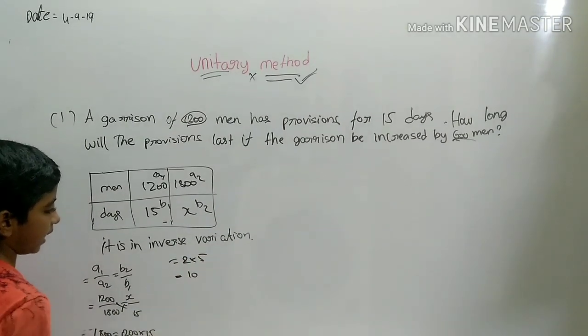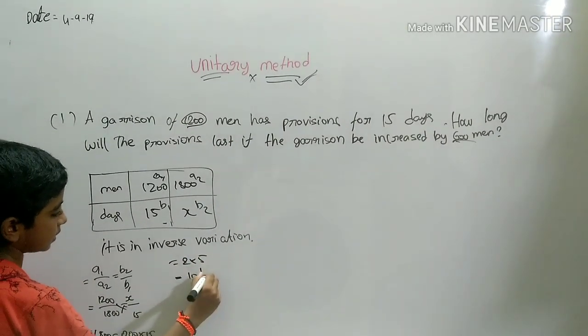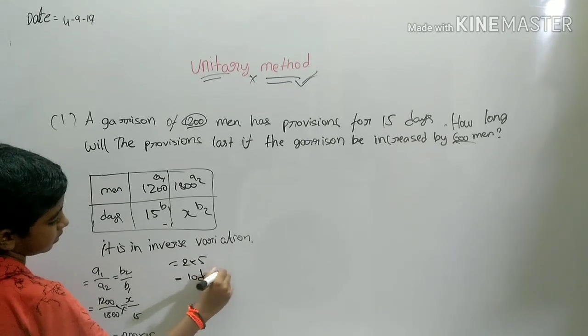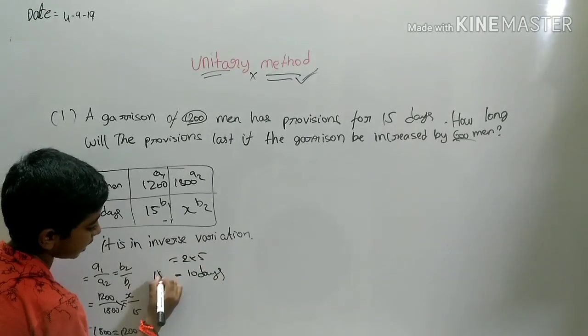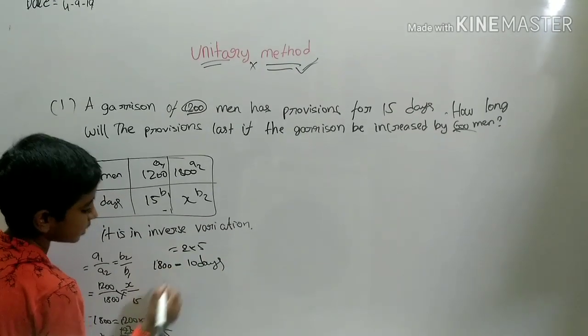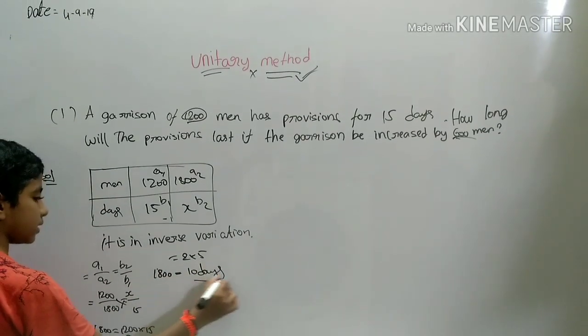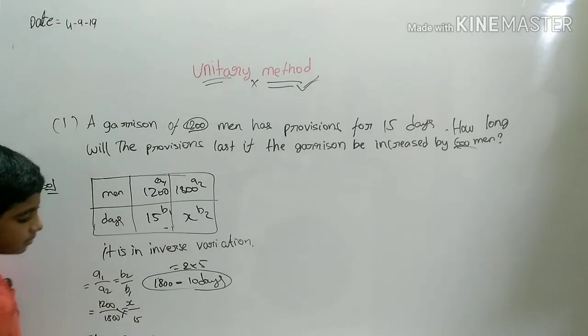After cross multiplication and cancellation, X equals 1200 into 15 divided by 1800, which gives us 10 days. So 1800 men will have provisions for 10 days. This is the answer.